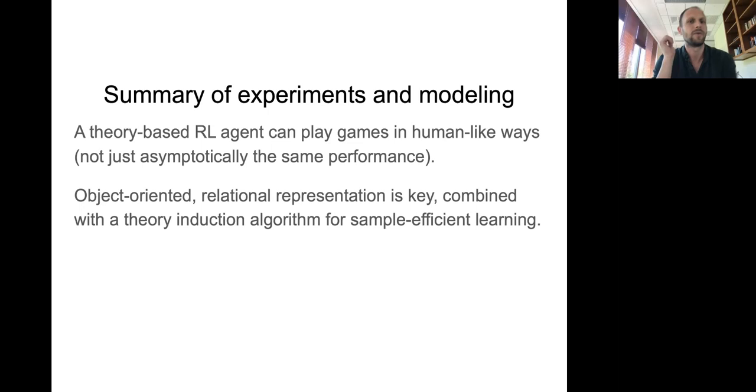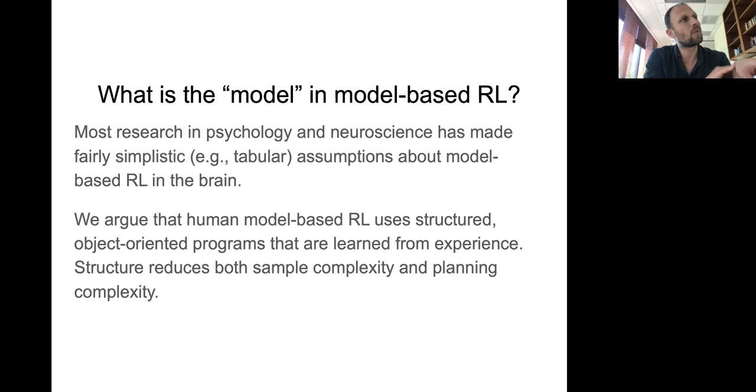To take stock of what I've shown you, a theory-based RL agent can play games in human-like ways. So that means not just asymptotically the same performance, but they're actually playing it in a similar way. We have to kind of go beyond just looking at score metrics in order to gain this insight. And I've argued that object-oriented relational representation is key combined with a theory induction algorithm for sample-efficient learning. So what is the model in model-based reinforcement learning? This is actually kind of more for psychologists and neuroscientists who have spent a lot of time studying model-based reinforcement learning, including myself, but often in very simple tasks where we could represent it in a kind of tabular form. A lot of our understanding of model-based reinforcement learning in the brain comes from these fairly simplistic tabular assumptions. And what we're trying to do now is kind of go beyond that and look at more theory-based representations that are non-tabular, that have more structure.